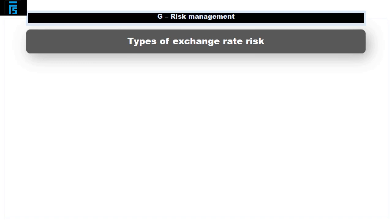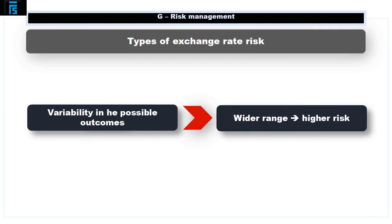Types of exchange rate risk. There are broadly three types of exchange risk. In mathematical terms, risk simply means a variability in the possible outcomes, and the wider the range of possible outcomes, the higher the risk is said to be. In this regard, a currency moving in favour of the organisation would be a risk in the same way that a move against would be. Notwithstanding this, the word risk is used in everyday language in a negative way — we only talk about the risk of something bad happening — and even in business, we tend to worry more about the downside. Management of the risk will be covered later in the presentation; however, the risks themselves are explained below.